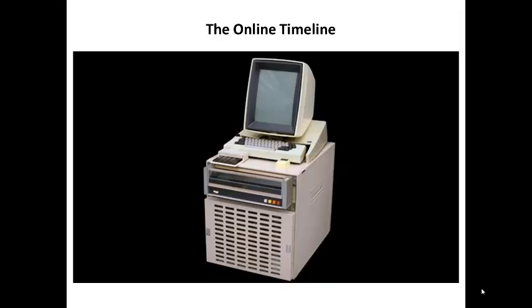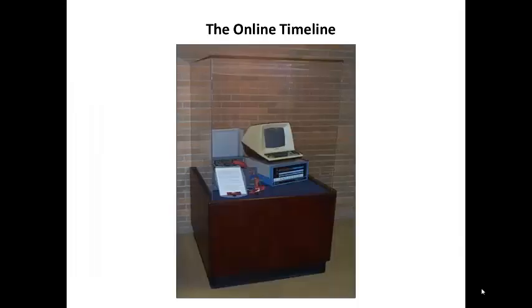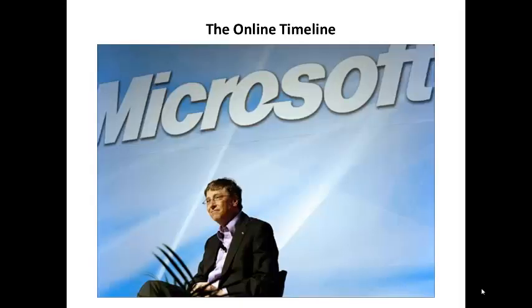In 1975, the Altair 8800 was the first computer to use a single-chip microprocessor, leading to faster and faster processing speeds. Also in 1975, Microsoft was established to develop and sell BASIC interpreters for the Altair 8800, and rose to dominate the home computer operating system market with MS-DOS — Microsoft Disk Operating System — in the mid-1980s, followed by the Microsoft Windows line of graphical user interface operating systems.